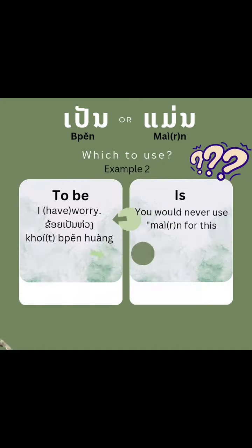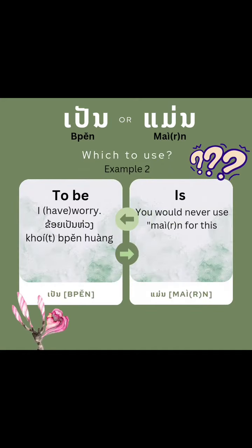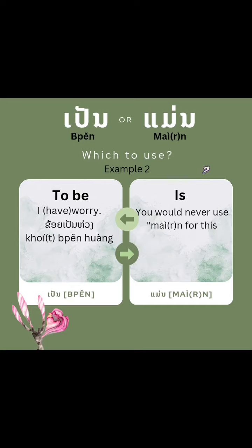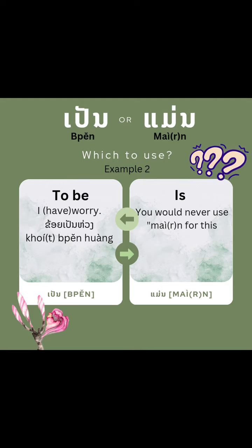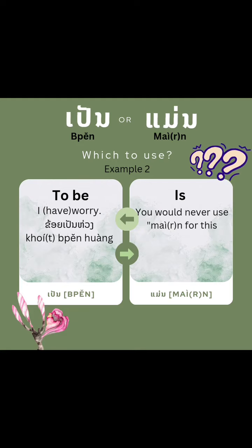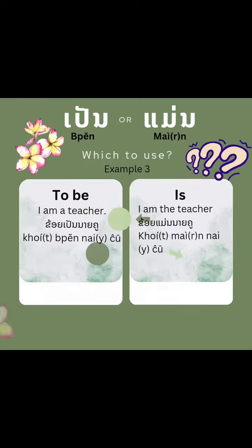And again, in example two, 'Khoi bin huang' means I am worried. Again, a worry is not something you can see, hear, or touch, so you cannot use Man for that. You have to use Ben. And if you use Man, you would be saying you are the worry.